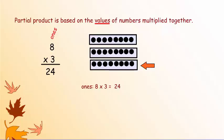Let's look at the first problem: 8 times 3 equals 24. Partial product is based on the values of the numbers multiplied together. It's important to look at the values of each place before you multiply. The 8 is in the ones place, which means it's worth 8, and there's a 3 below — times 3 means you're going to do 8 three times. Down below, you're going to write 'ones' because we have 8 times 3 in the ones place. Write the problem 8 times 3 and then write what it equals.